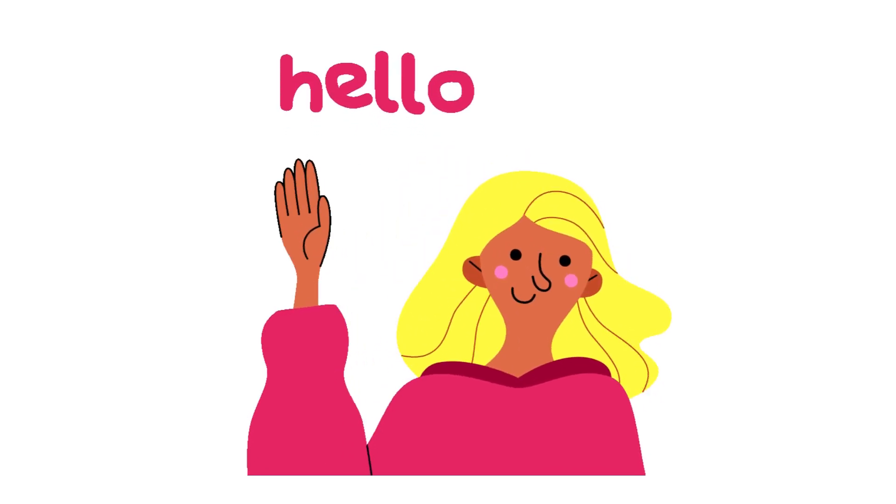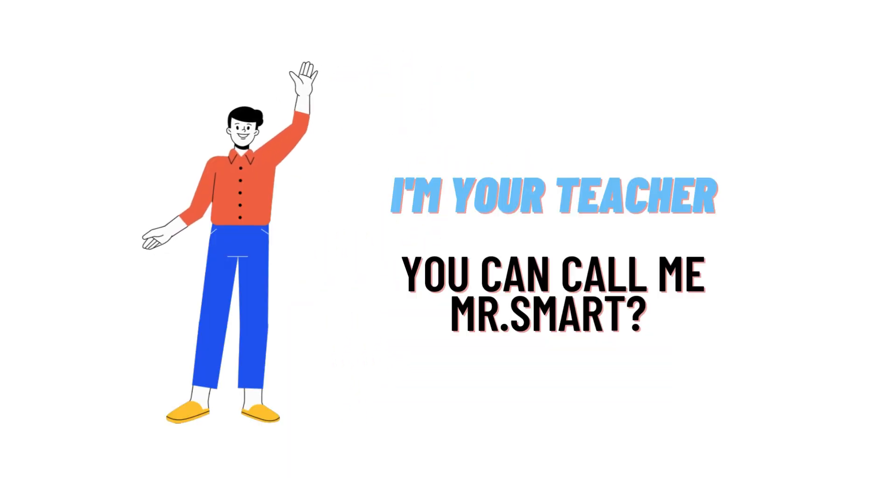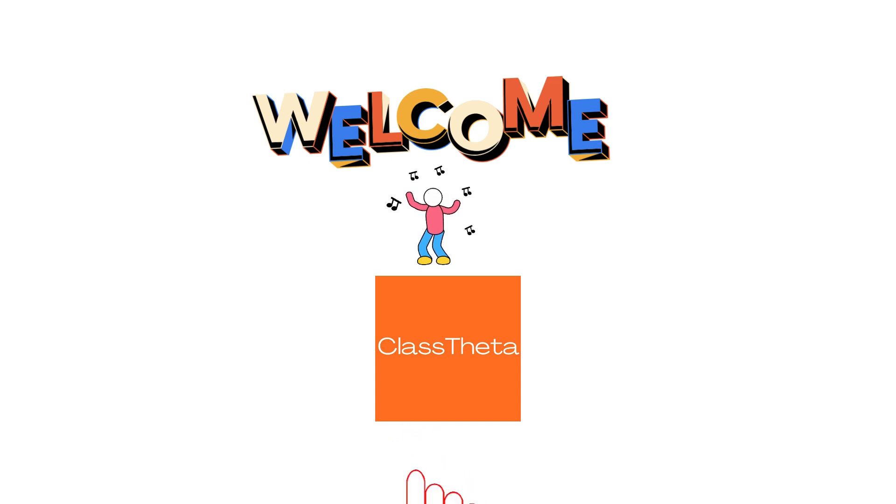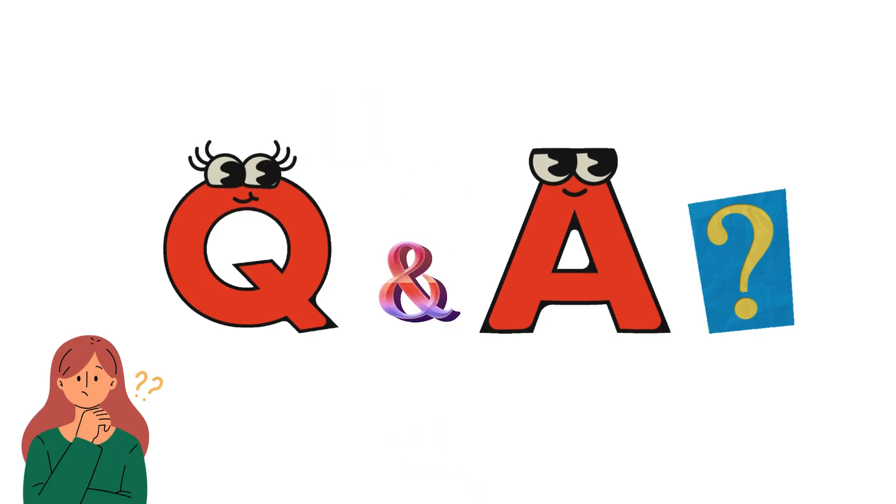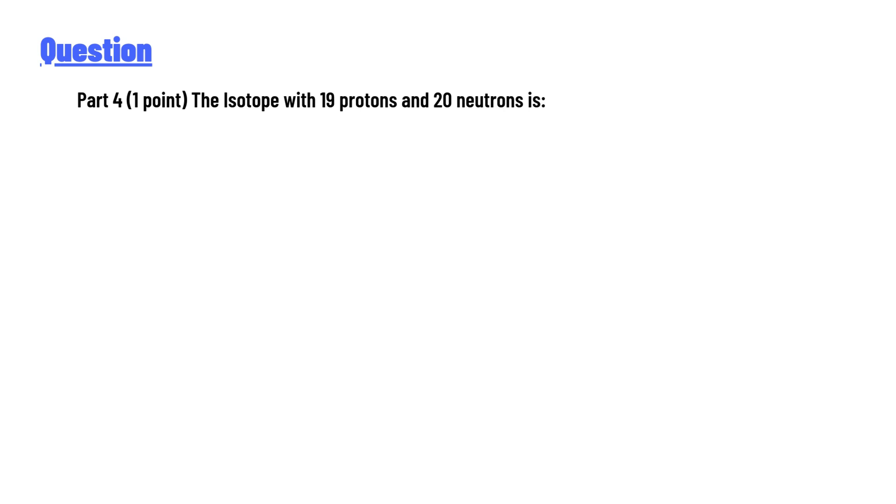Hello everyone, how are you? I am Akrash, your teacher here, and I will teach you different questions and their answers. So I welcome you on ClassTheta.com. Our today's question is part 4, one point: the isotope with 19 protons and 20 neutrons is.